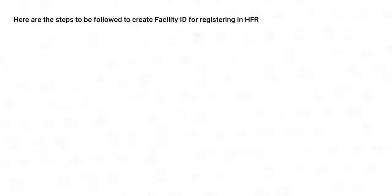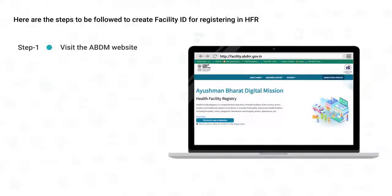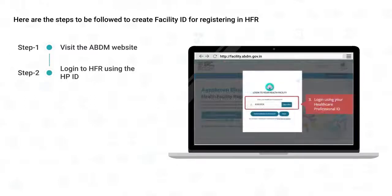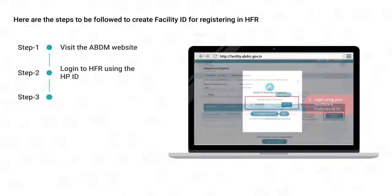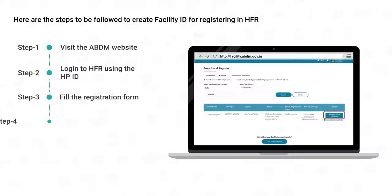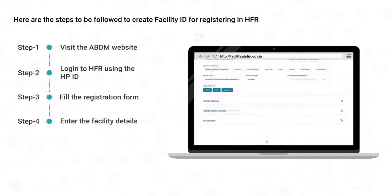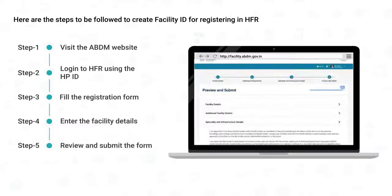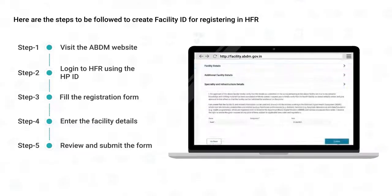Let's look at the steps to create a Facility ID for registering in HFR. To get a facility registered, visit facility.abdm.gov.in. Log into HFR as a Facility Manager using the HP ID. Fill the registration form, enter the facility details, and complete the form. Review and submit the form for verification. On submission, a Facility ID will be generated.